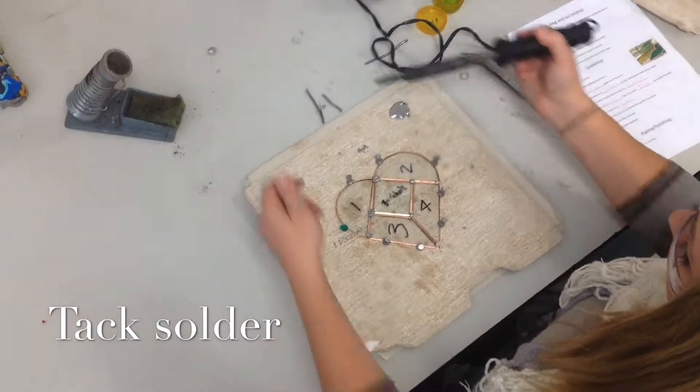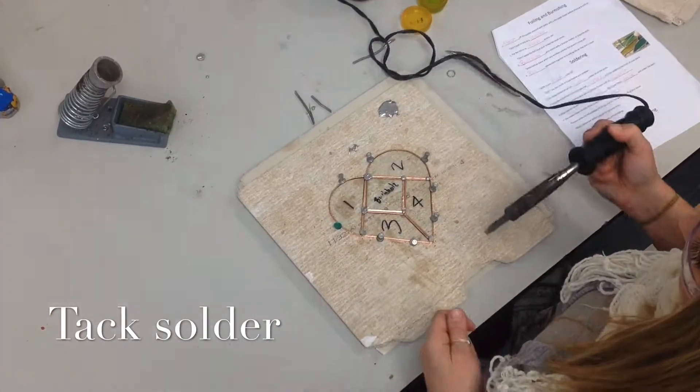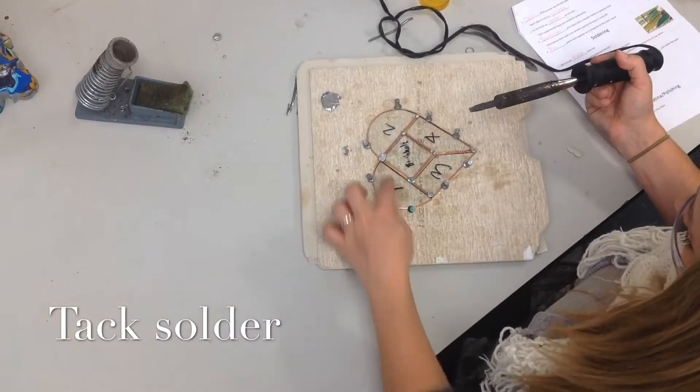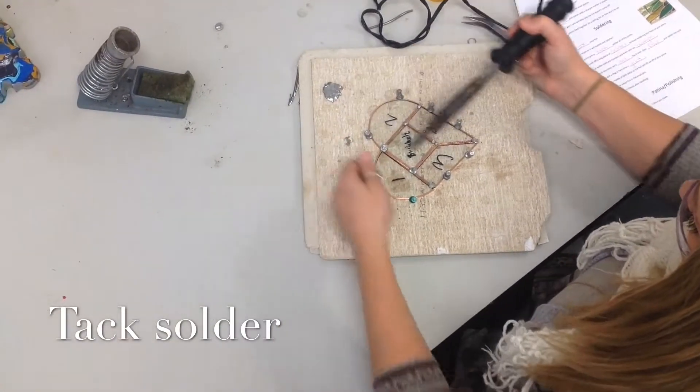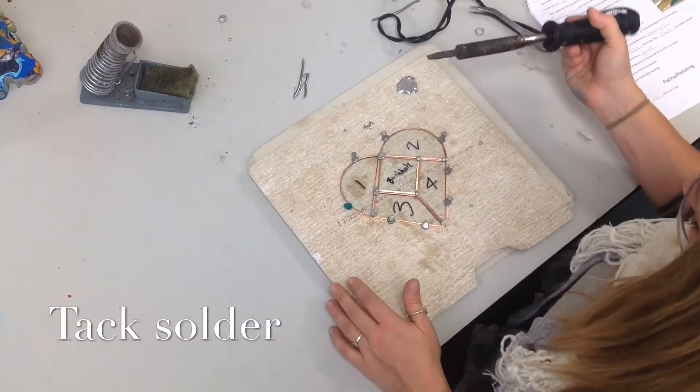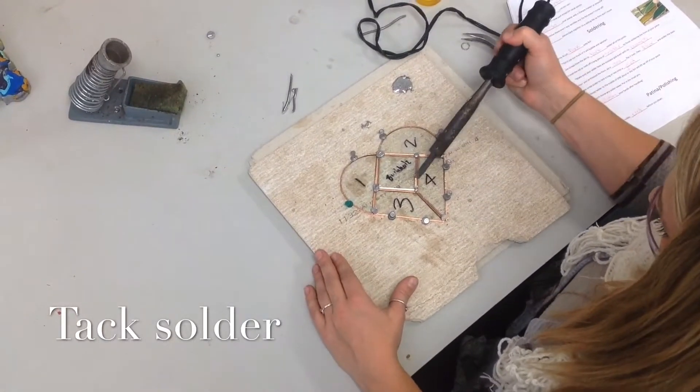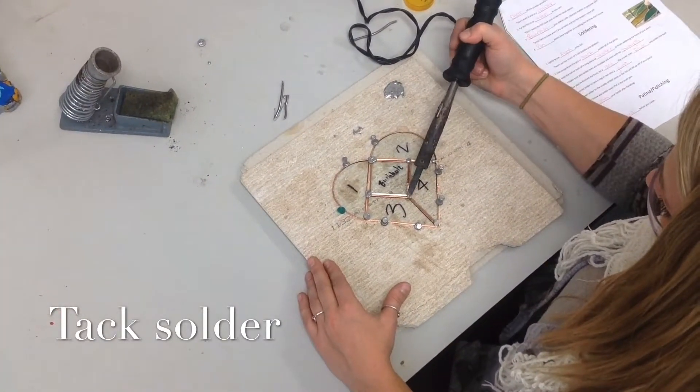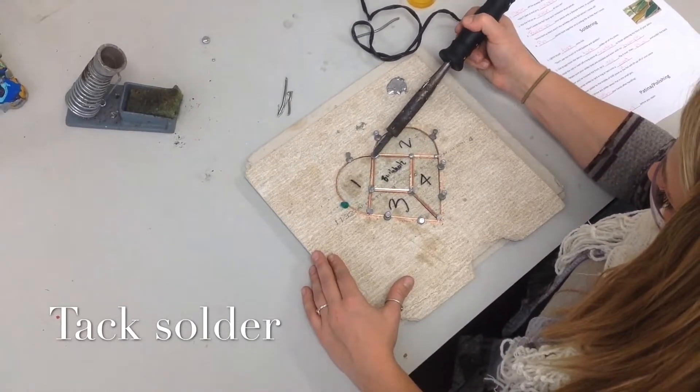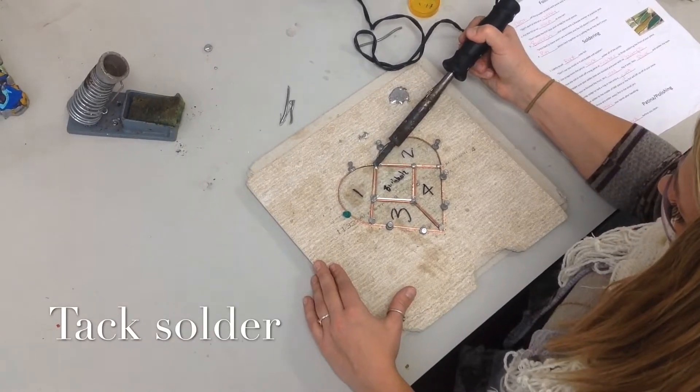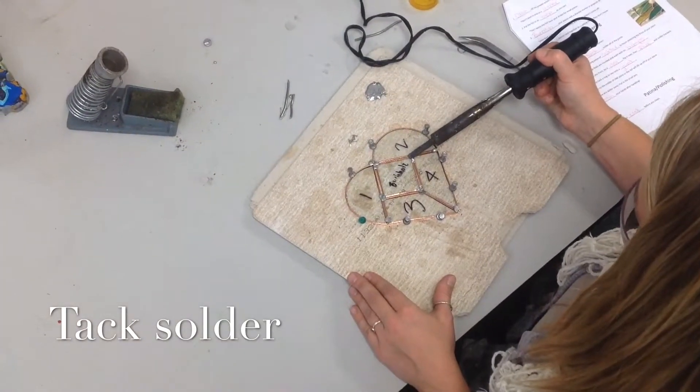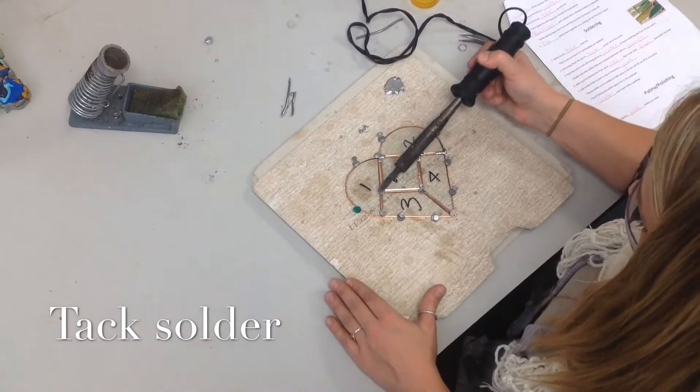Whatever line you're going to do, I always make sure my line is facing me, parallel to me. If I'm going to do this line first, I would move my project so it's this way. Otherwise, you're holding your iron weird and it's uncomfortable. For tack soldering, you just melt your solder and lift up. This iron might not be very hot because I just started it. I'm just melting and lifting straight up.